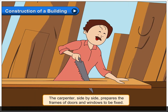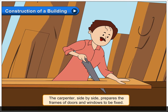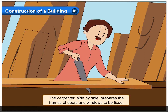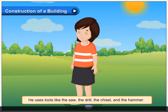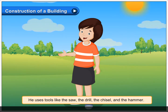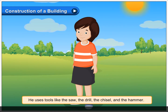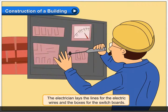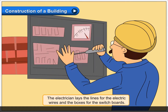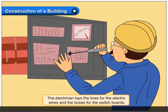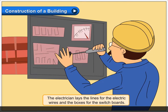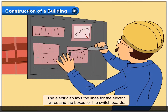The carpenter, side by side, prepares the frames of doors and windows to be fixed. He uses tools like the saw, the drill, the chisel and the hammer.